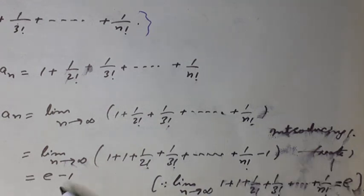equals e minus 1, because limit n tends to infinity 1 plus 1 plus 1 over 2 factorial plus 1 over 3 factorial plus so on plus 1 over n factorial equals e, and this minus 1 is finite.